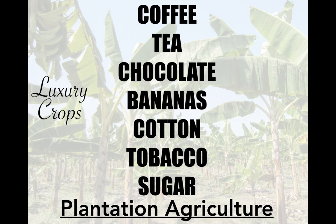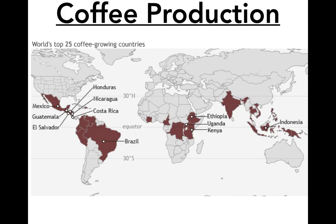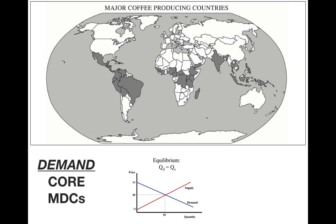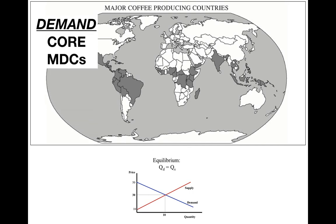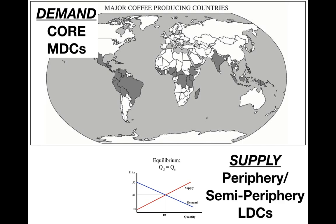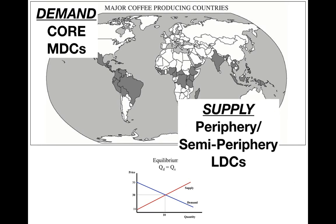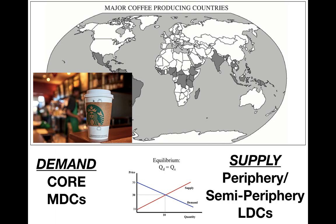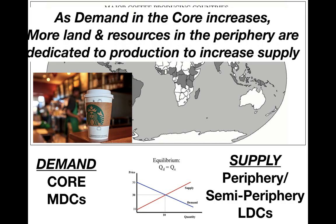This is not the type of thing that we need to eat. This map shows the spatial extent of coffee production. We can see coffee production really is along the tropics in semi-periphery and peripheral countries. The coffee demand is created in the core or most developed countries, but the production all happens in the periphery or semi-periphery LDCs. As demand in the core increases, so does supply in the periphery and semi-periphery, and more land and resources are dedicated to production in order to increase supply.